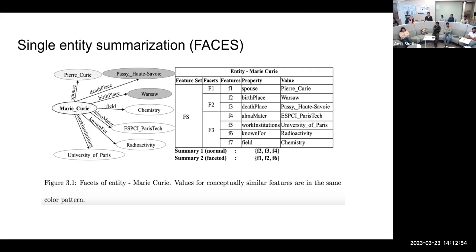And so summary one, if we look in this figure, it is normal summary and summary is a faceted summary of entities. So normal summary, it just focuses on some common and related features like birthplace, deathplace. But then faceted is more like a subset of different kinds of features. So there is F1, F2 and F6 as the features from the column features. And it includes F1 is spouse, then F2 is the birthplace and F6 is known for. So it collectively talks about the place, the relationship, as in the spouse feature, and even the university or where she worked or what she worked for. So that is what is the proposed approach in the FACES paper.